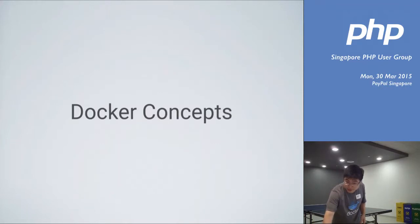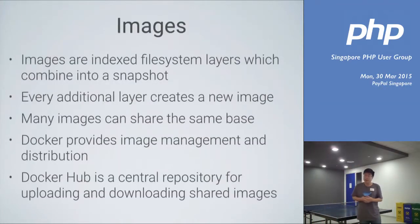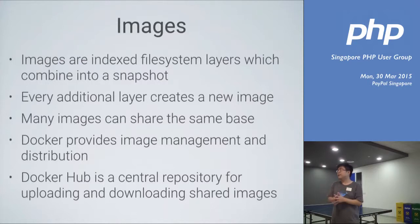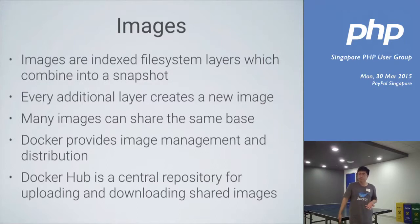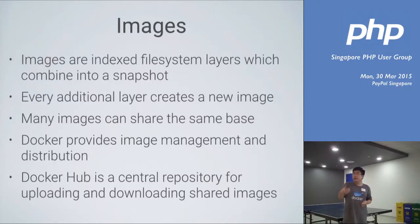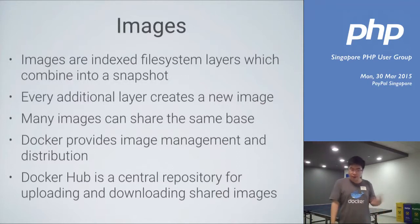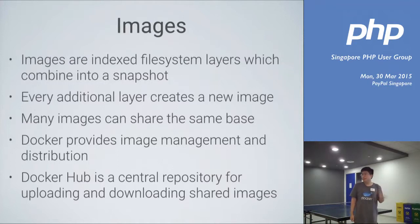Now, some basic Docker concepts. Docker has a concept of images. Images are indexed file system layers which combine into a snapshot of the file system. You create layers of different files — every change to the file system is copy-on-write, meaning each layer is like a diff. Many images can share the same base. New images can reference a new layer and it becomes another image, so it's kind of like a tree structure. Docker provides tools to manage and distribute these images, and they also have something called Docker Hub — kind of like GitHub but for Docker images — which is a central repository for uploading and downloading shared images.